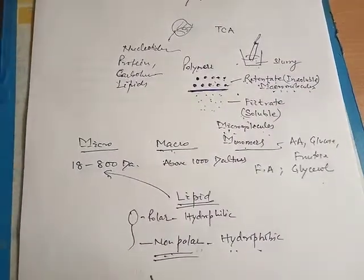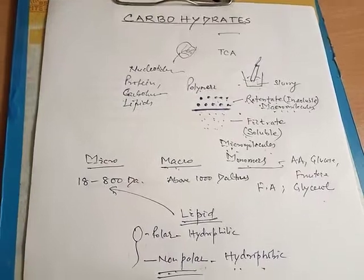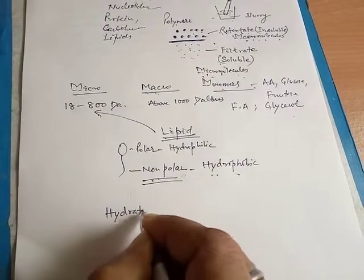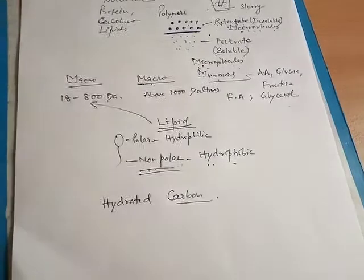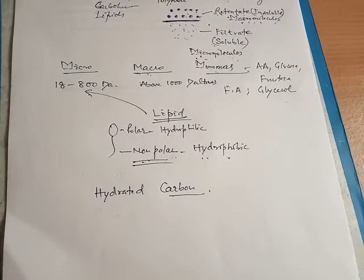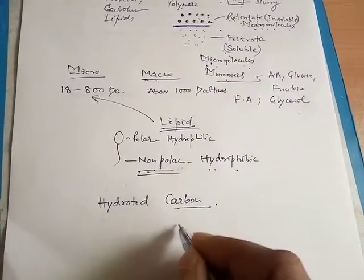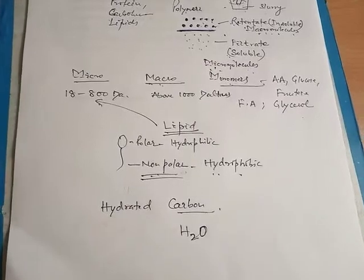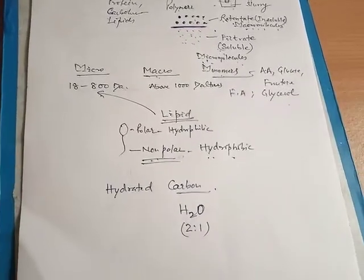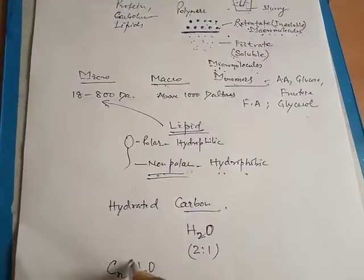Today we will discuss about carbohydrates. Carbohydrates were earlier considered to be hydrated carbon — an organic compound having hydrogen and oxygen in the same ratio as contained in water, that is 2:1. It was represented by the general formula Cn(H2O)n.